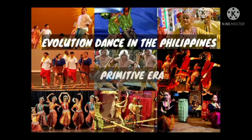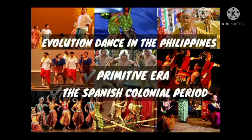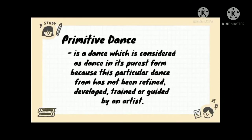Evolution of dance in the Philippines: the primitive era and the Spanish colonial period. Early Filipinos' dance was an expression of community life that animates various rituals and ceremonies. They shared common religious beliefs, generally animistic, and made propitiatory offerings to household gods called anitos. Ethnic dances are found among ethno-linguistic groups: tribesmen dances, codelera dances, and Muslim dances. Primitive dances were classified into the following categories.